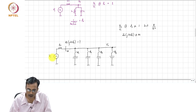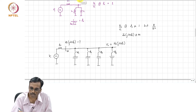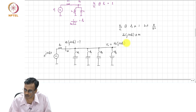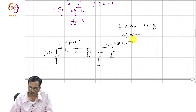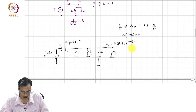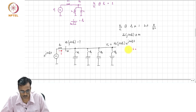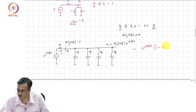Let us calculate what that large value is. If V_i is e^(j2πF_s·t), then V_o is H₀(j2πF_s) times e^(j2πF_s·t). Therefore, the current I flowing through the resistor is e^(j2πF_s·t) times (1 minus H₀(j2πF_s)).